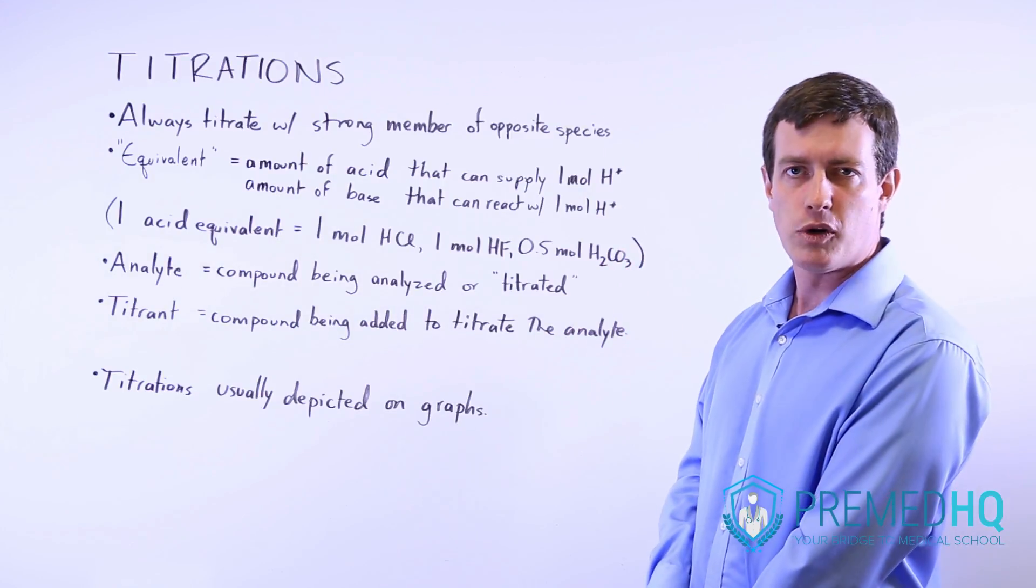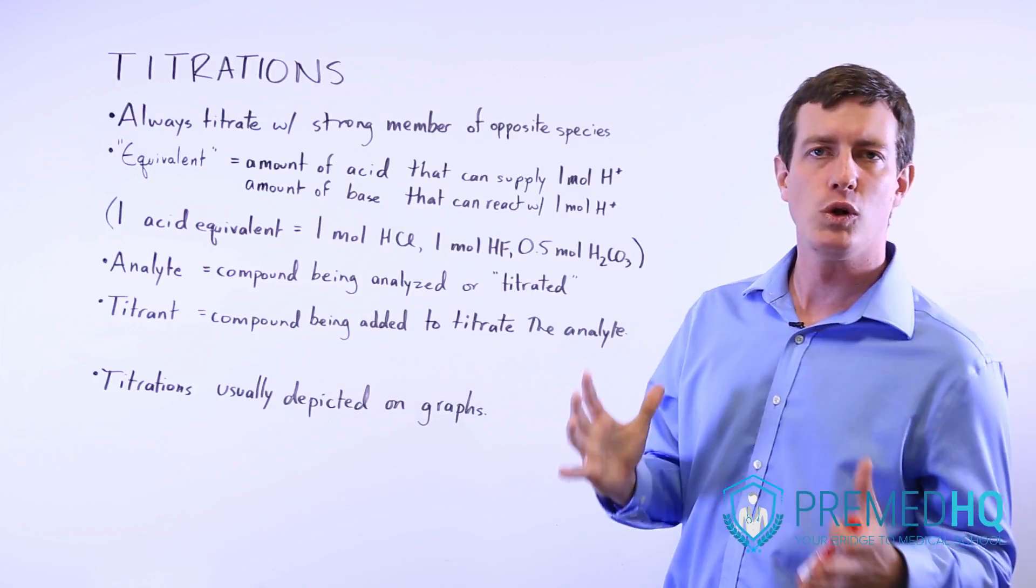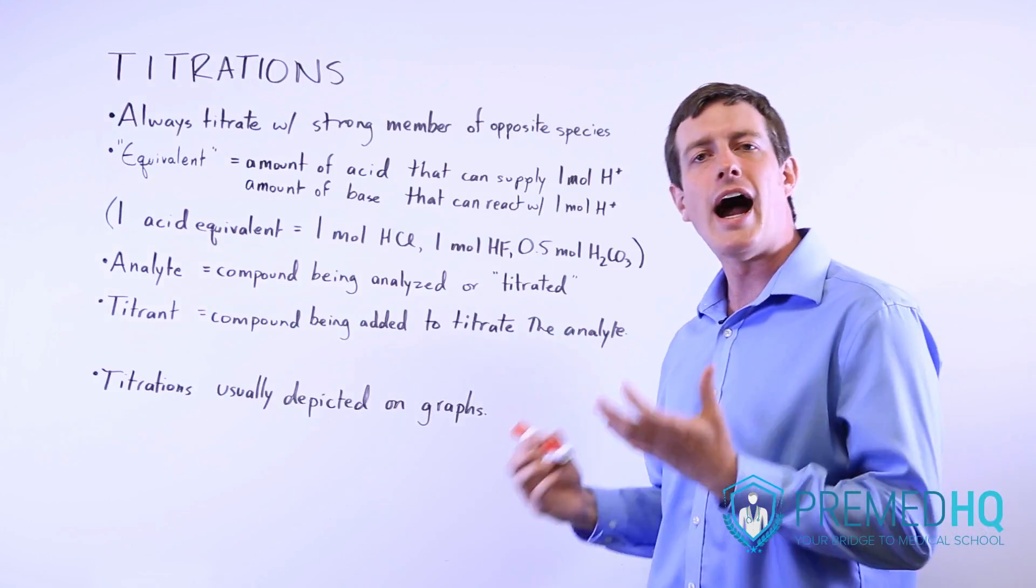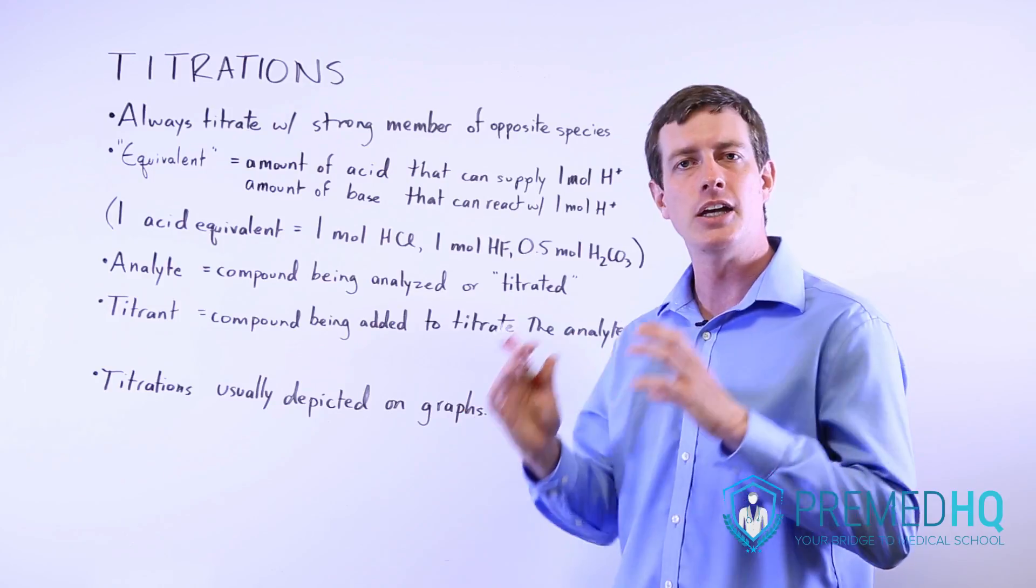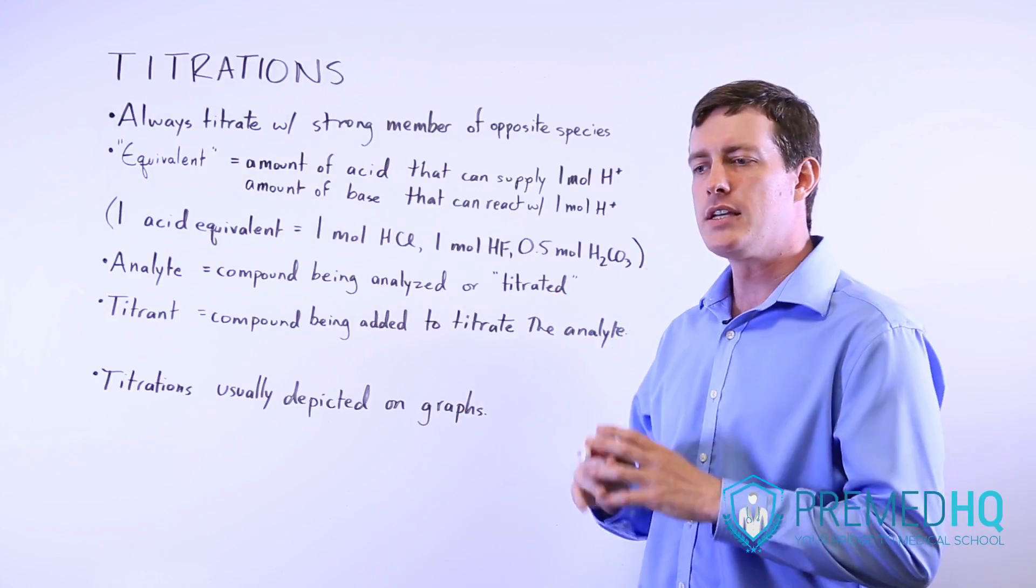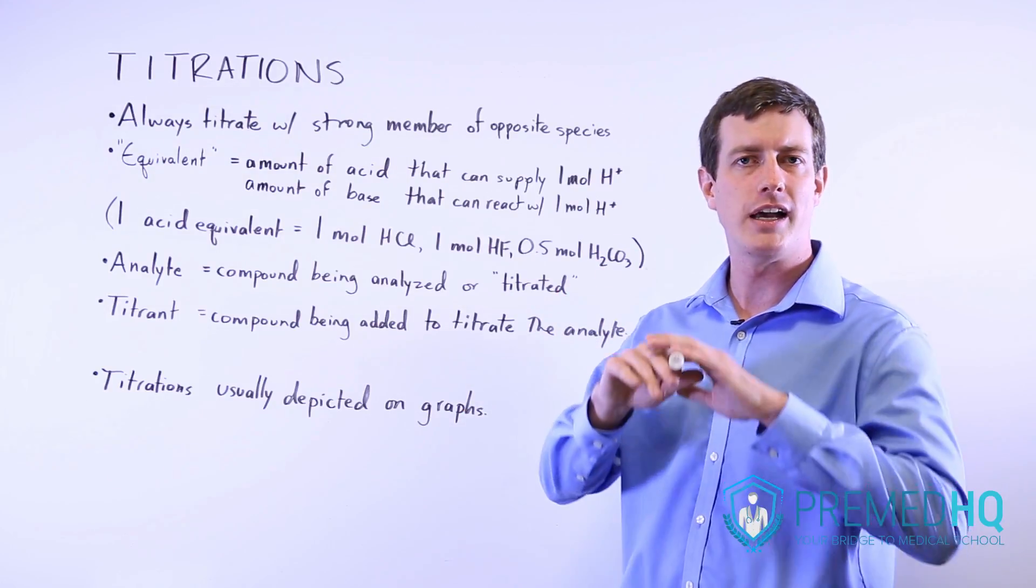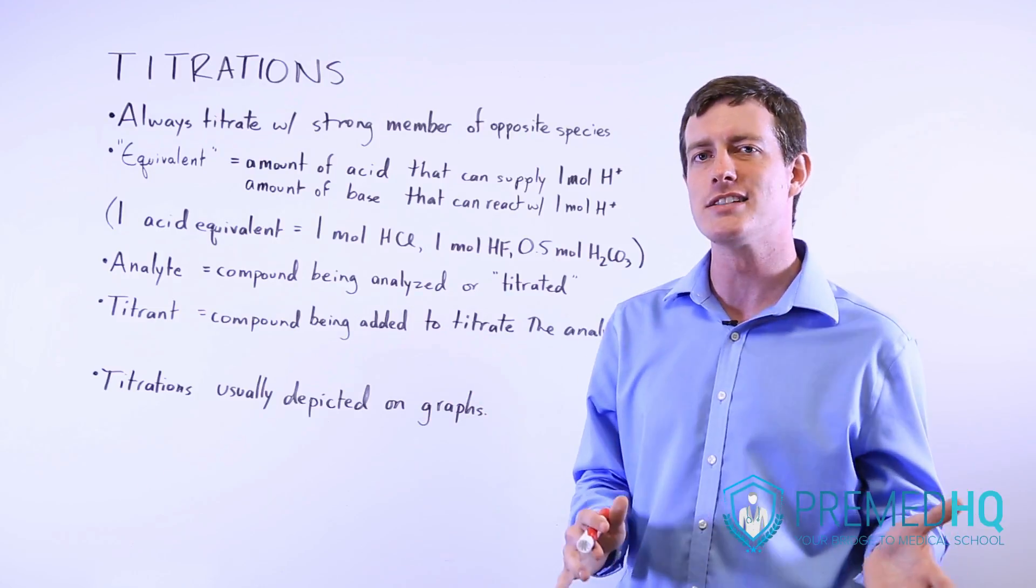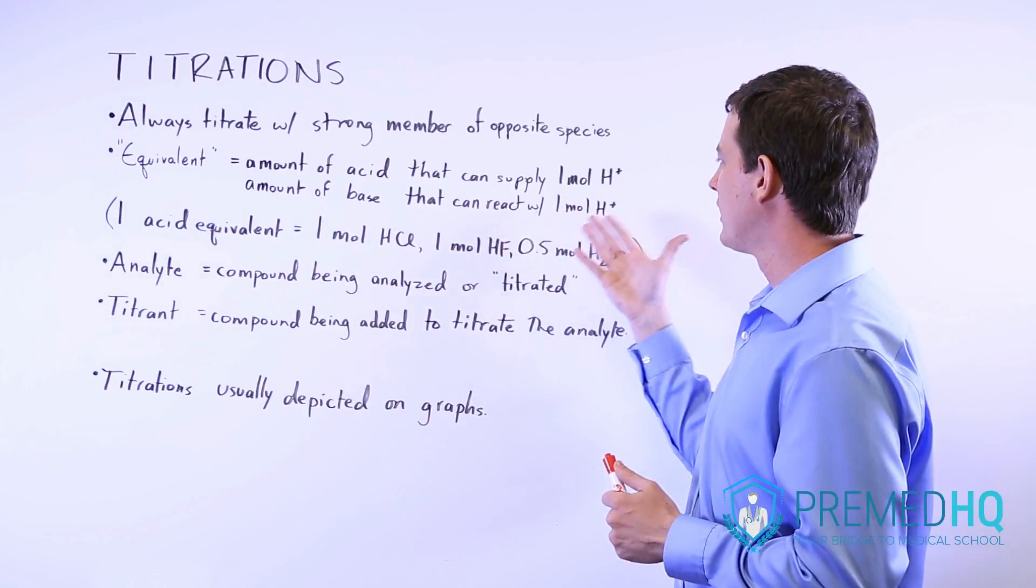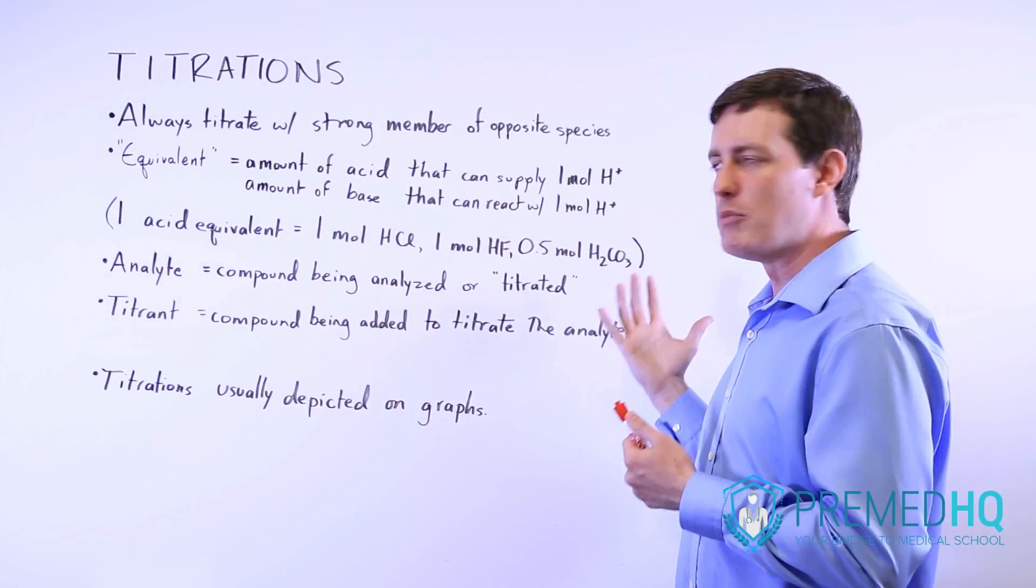Similarly, a base equivalent could be one mole of NaOH or half a mole of something like Ca(OH)2, because that half mole will supply an entire mole of OH- that can react with and essentially consume a mole of protons.